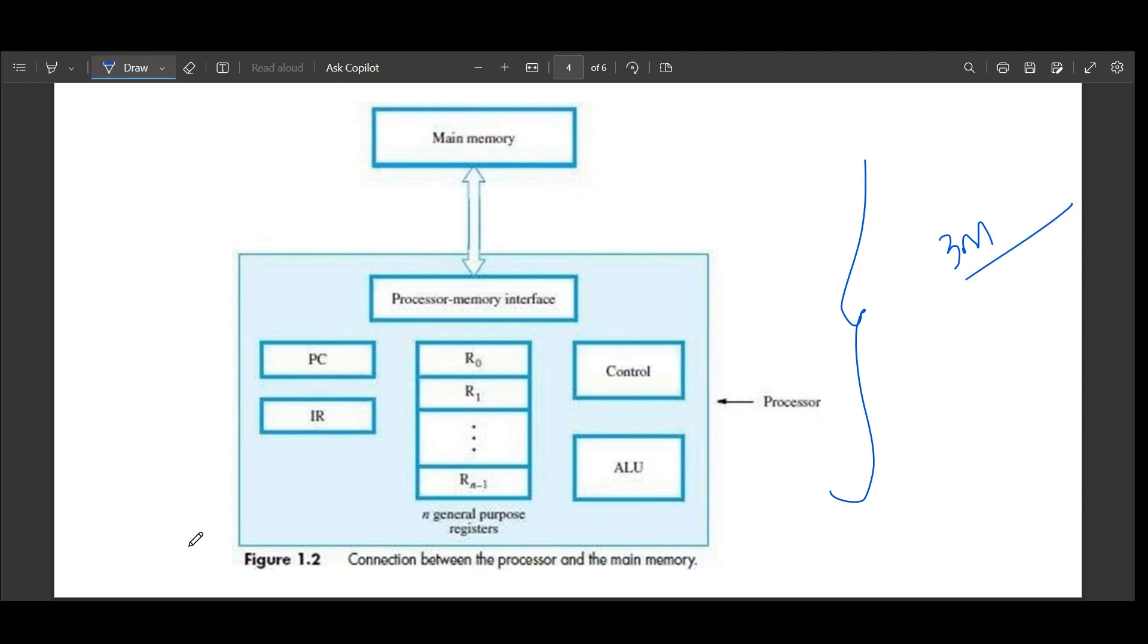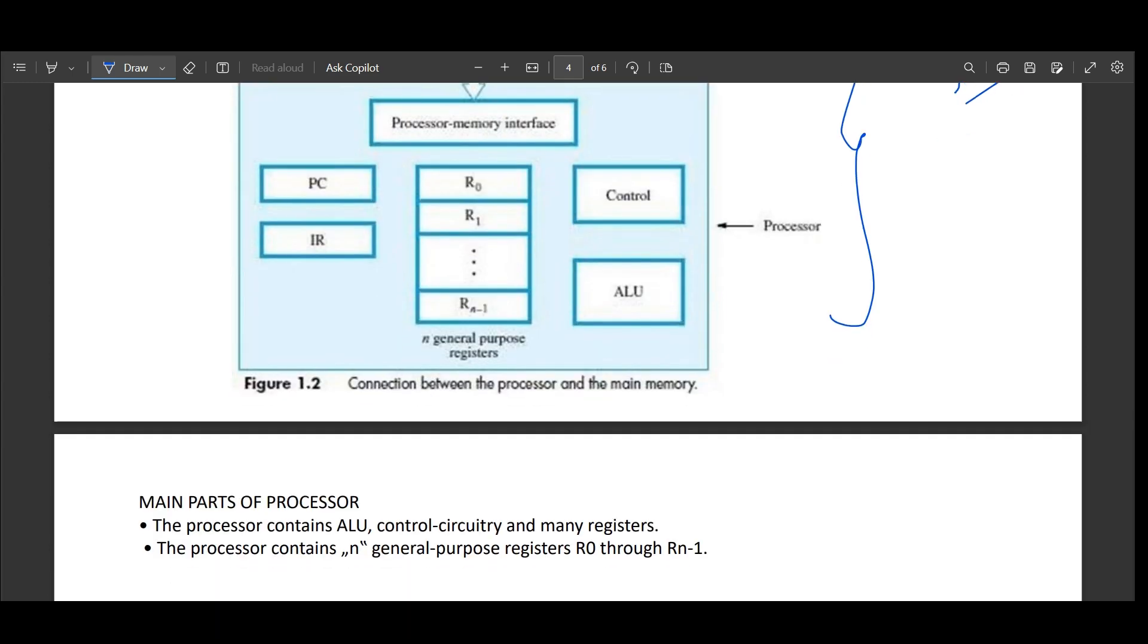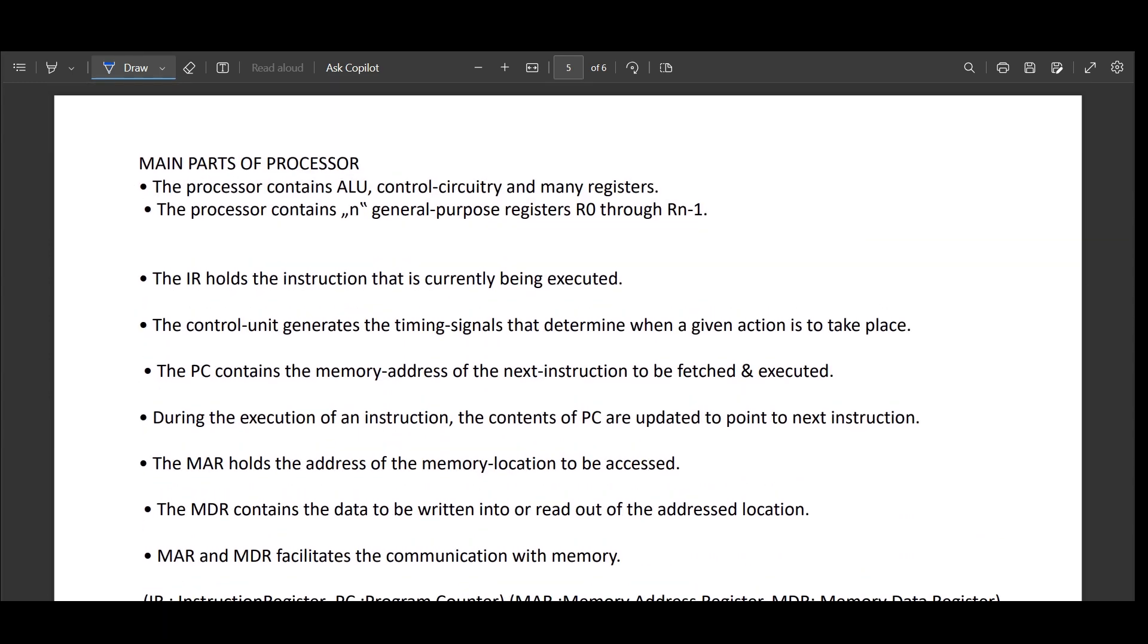You can score three marks from this diagram. Main memory and inside the box, you have PC, IR, control, ALU. And I will be describing what these individual functional boxes do shortly. So let's get into the concept. I request you all to practice this diagram once or twice.